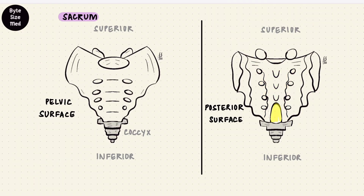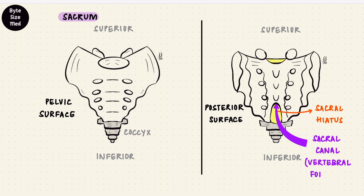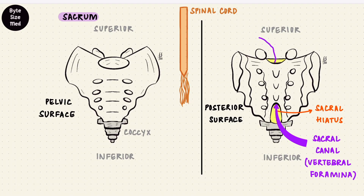The fifth sacral vertebra doesn't have a spinous process or laminae. That leaves a space called the sacral hiatus, which leads into the sacral canal. The sacral canal is formed by the fusion of the vertebral foramina of all five sacral vertebrae. The spinal cord usually ends above this, so the sacral canal — a continuation of the vertebral canal — contains the cauda equina, which continues from the spinal cord, along with the filum terminale, the spinal meninges, and the lateral sacral vessels.